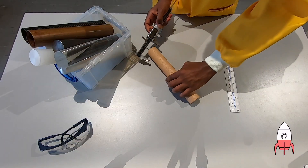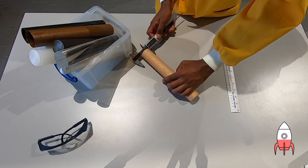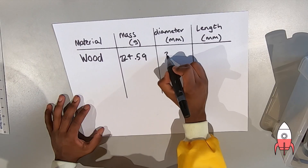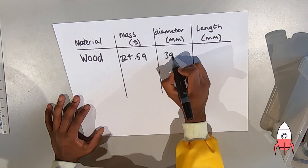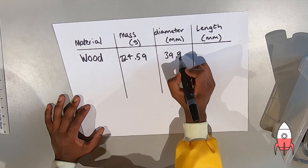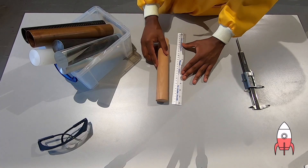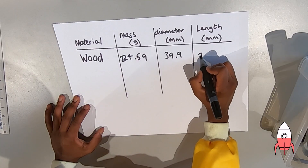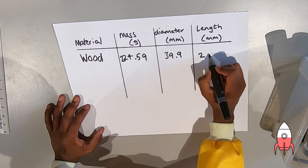For this step we're going to measure the volume of our materials. Using a caliper, firstly measure the diameter of our tubes. We will use this number and half it to find the radius, which we will use in the following step. Then pick up your ruler and measure the length of your material.